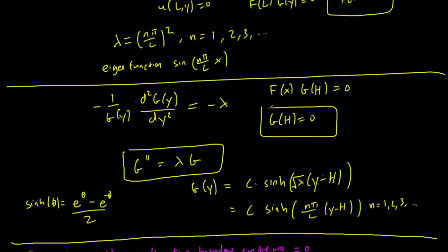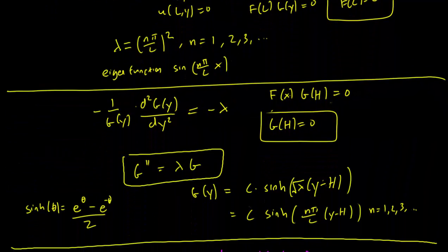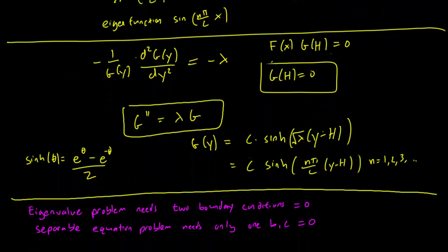The astute student might ask how we knew that f was an eigenvalue problem and g was a separable equations problem. So here's the way you'll figure it out. The eigenvalue problem needs two boundary conditions to be set to 0, whereas the separable equation problem needs only one boundary condition to be set to 0.